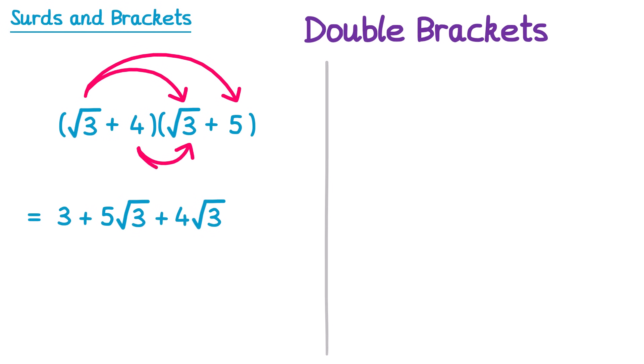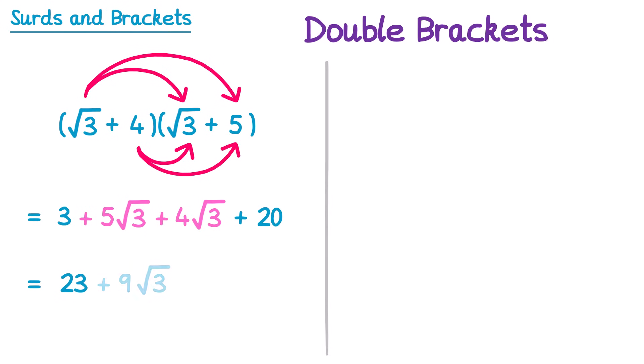And finally 4 multiplied by 5, which is 20. Now we can simplify: we've got 3 plus 20, which gives 23. And we can also simplify the two root 3 terms — since they have the same number inside the square root we can add them: 5 root 3 plus 4 root 3 is 9 root 3.